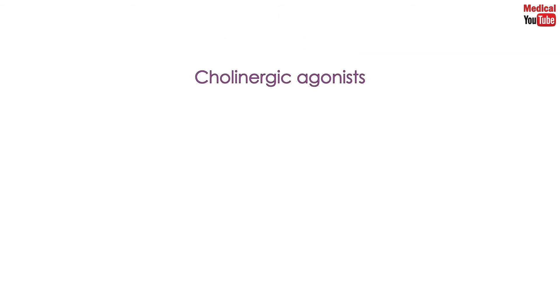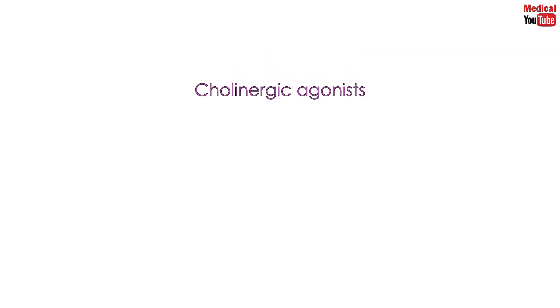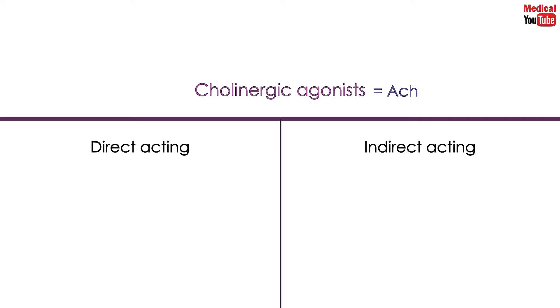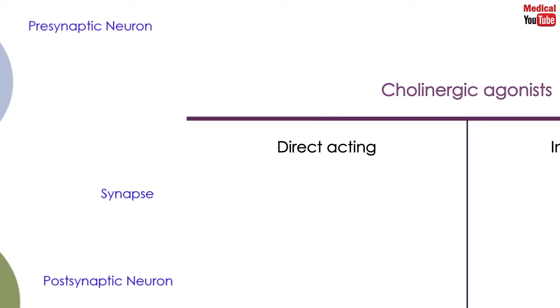Cholinergic agonists mimic acetylcholine actions in the body, and they are classified into two main groups: direct-acting and indirect-acting cholinergic drugs.